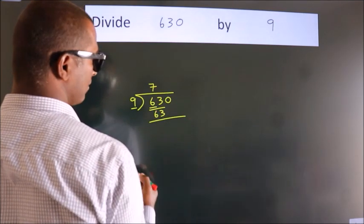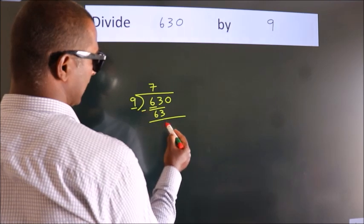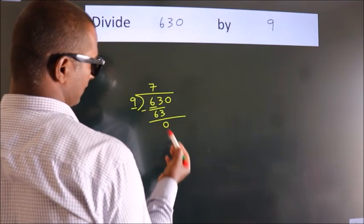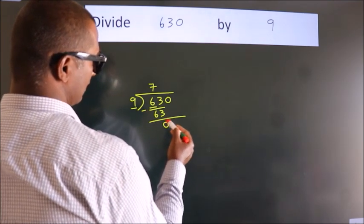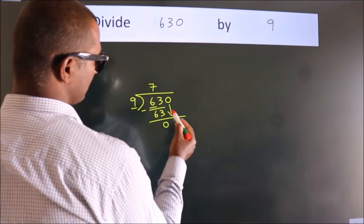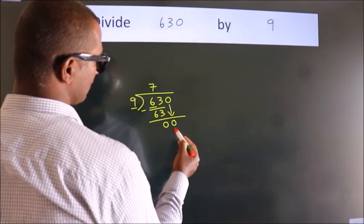Now, we should subtract. We get 0. After this, bring down the beside number. So, 0 down. So, 0.